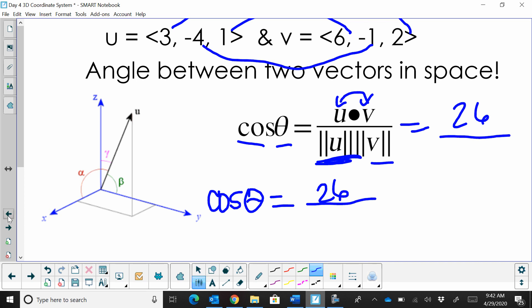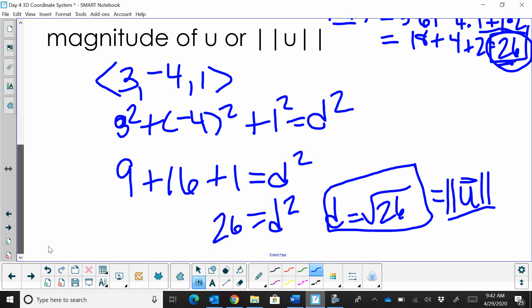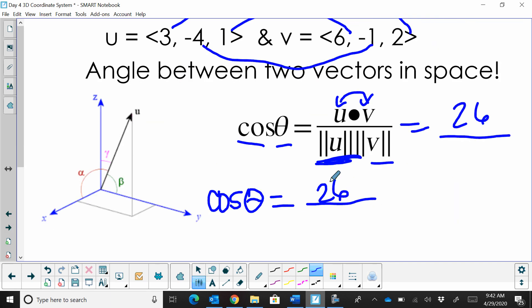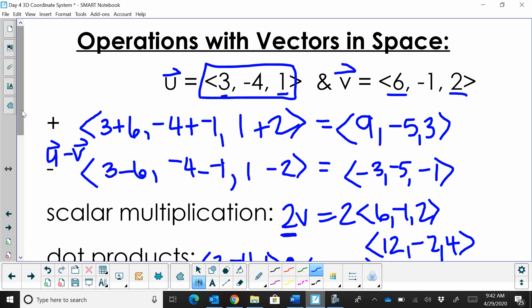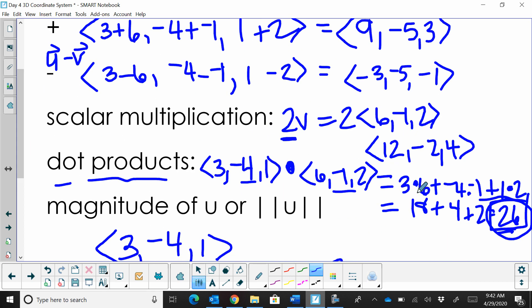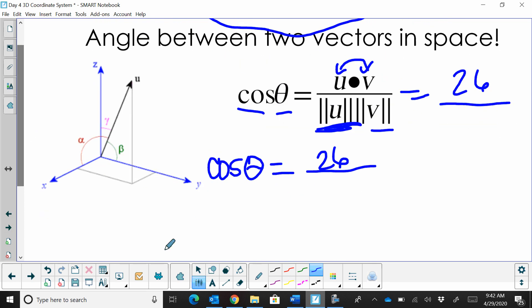So we have 26 over the magnitude. Well, we just found the magnitude of u back here, right? Well, the magnitude of u is just the distance and that's the square root of 26. Was the dot product? The dot product was 26. It just happened to be the same as the magnitude. Okay, so this is going to be the square root of 26 times.